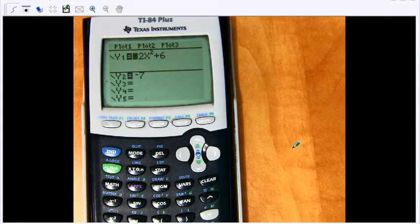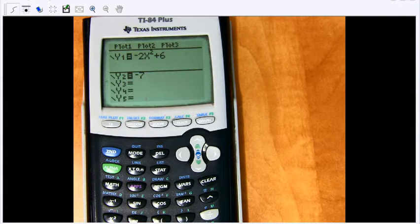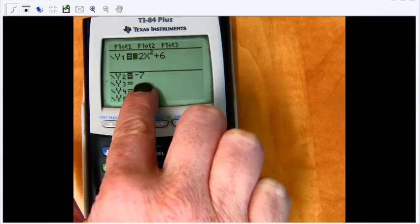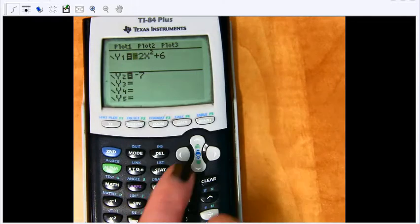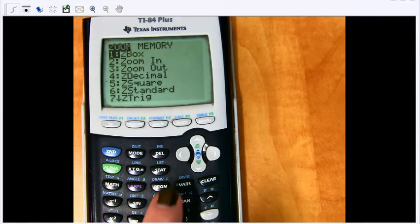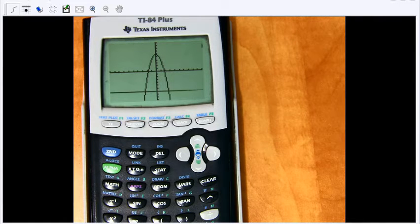Once those are entered, we need to find the intersection points of those two functions. I'm going to check my window. I know I've got an upside down parabola that's going to have a vertex at y equals 6, and I'm at negative 7, so I think a standard window is fine. We go to zoom, standard, which is 6, and hit enter. We're in that standard window, and that looks good.